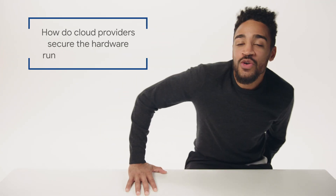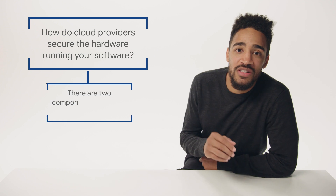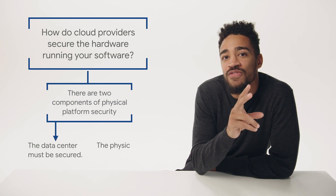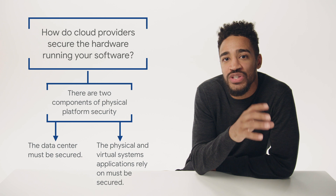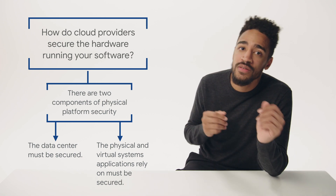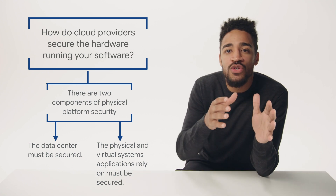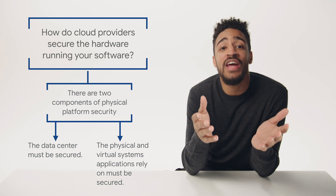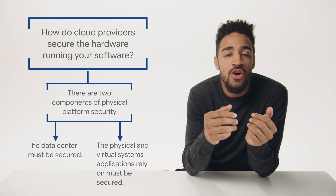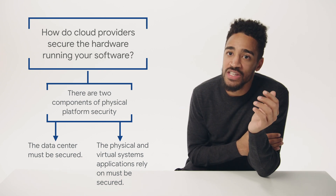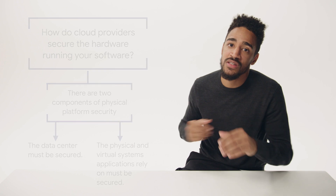OK, here's what we know. Physical security has two components: securing the physical servers and the data centers that data lives on, and ensuring the physical and virtual systems that applications rely on are secure, like with a root of trust. If the physical devices aren't properly secured, someone could steal a machine with your data, plant malware on it, or otherwise tamper with the machines, compromising the security of anyone who uses those instances.